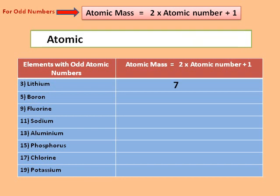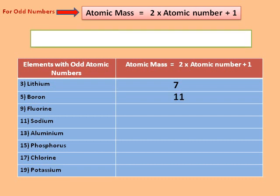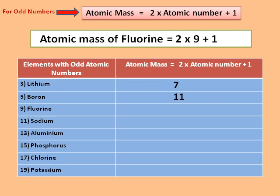Atomic mass of boron is equal to 2 × 5 + 1 = 11. Atomic mass of fluorine is equal to 2 × 9 + 1 = 19.